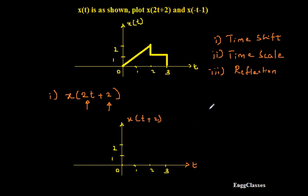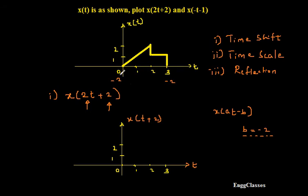If I compare this with x of at minus b, which is the standard signal form, then minus b equals minus 2, so b is equal to minus 2. The shift is minus 2, meaning I have to shift the signal to the left by 2. So what will my limits be? I add minus 2 to the extreme limits: 0 minus 2 is minus 2, and 3 minus 2 is plus 1. So the limits of the new signal will be from minus 2 to plus 1.